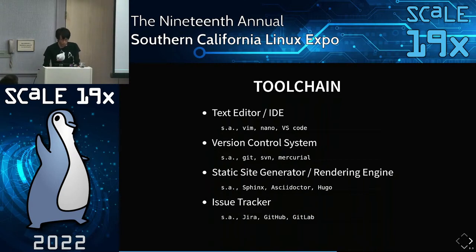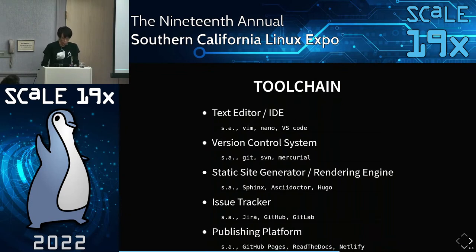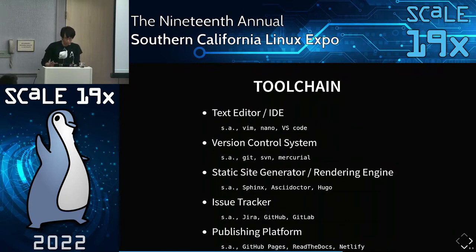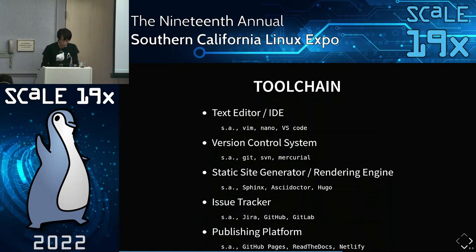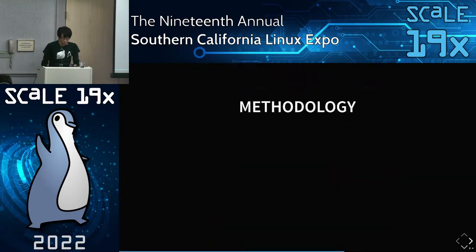On the project management side, if you use issue trackers, you can manage documentation issues on platforms like JIRA, GitHub, or GitLab. You'll also want a publishing platform if you want to make documentation public — popular ones are GitHub Pages, Read the Docs, and Netlify. For more advanced setups, you can automate production pipelines using GitHub Actions or Jenkins, so commits to your repo automatically trigger a build that publishes to your publishing platform.